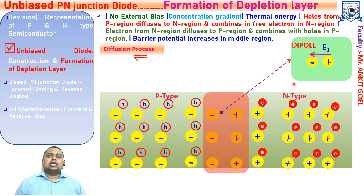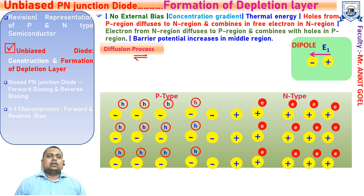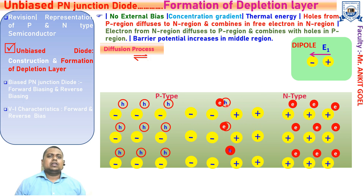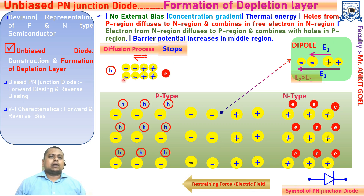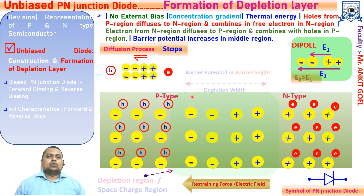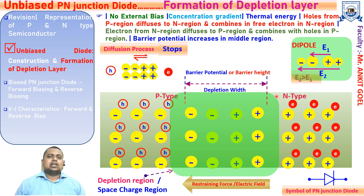These regions create a dipole which develops a restraining force and acts as a barrier to the flow of the majority charge carriers. However, this is initially a weak electric field, so it will not oppose the diffusion process and further electron-hole recombination occurs. As you can see, the electric field E2 is much more than E1 from the previous case. This restraining force will stop the diffusion process — electrons are repelled by the negatively charged ions and holes are repelled by the positively charged ions — and equilibrium is reached. We get a region depleted of free charge carriers called the depletion region.